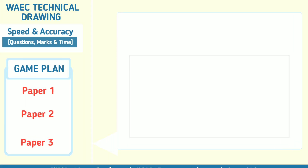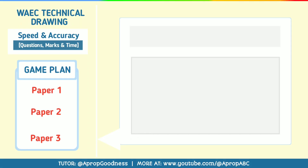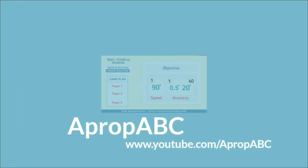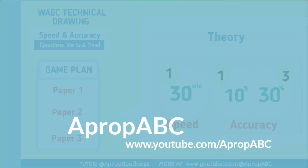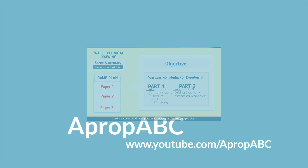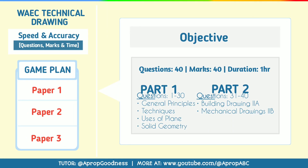For WAEC Technical Drawing, we have Paper 1, Paper 2, and Paper 3 — that's objective, theory, and practical respectively. For Paper 1, which is objective, you have 40 questions amounting to 40 marks for one hour.